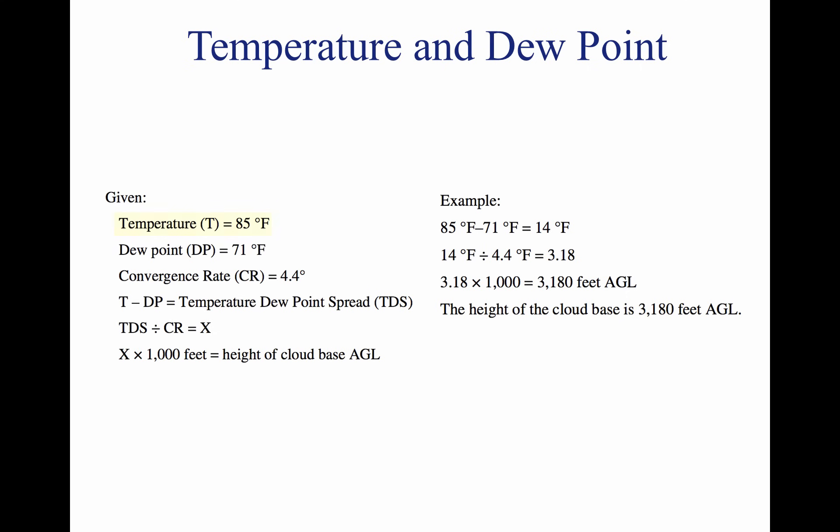As shown above, with an outside air temperature of 85 degrees Fahrenheit at the surface and dew point at the surface of 71 degrees Fahrenheit, the spread is 14 degrees. Divide the temperature dew point spread by the convergence rate of 4.4 degrees Fahrenheit and multiply by 1,000 to determine the approximate height of the cloud base.